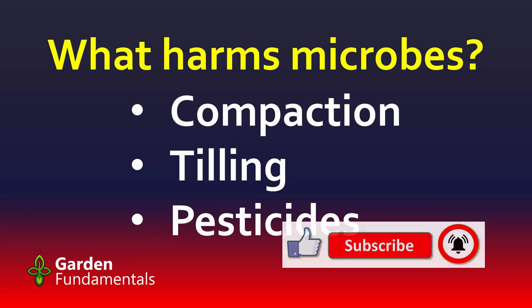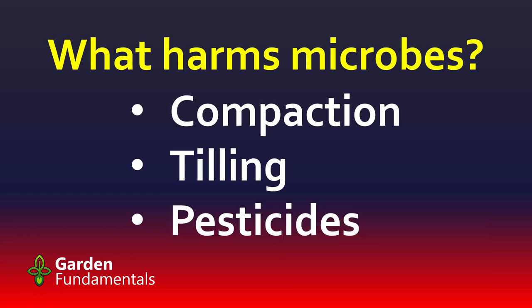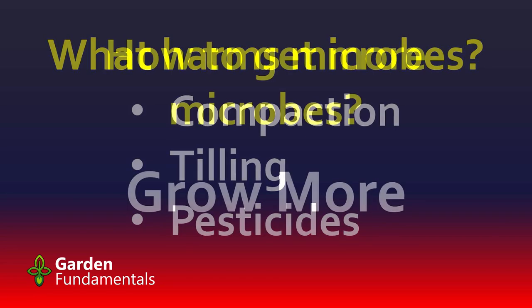Pesticides can also be a problem — too many chemicals of any type can harm microbes. But not all pesticides are as bad as people make out. For instance, if you take motor oil and drop it in your garden, there are bacteria that eat oil, so eventually that oil gets eaten up. Take something like Roundup — there are bacteria that eat Roundup for lunch. All these chemicals can harm microbes, but there are also microbes that degrade those chemicals. If you can get away without using pesticides, that's better for your garden.